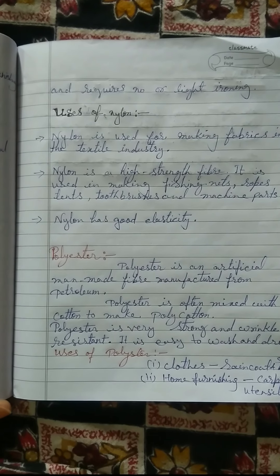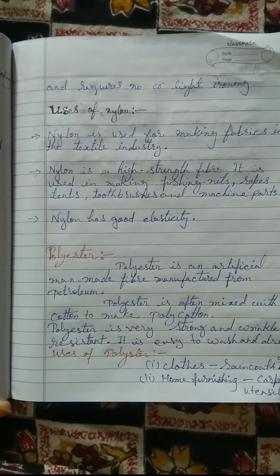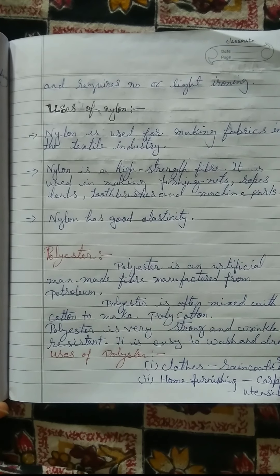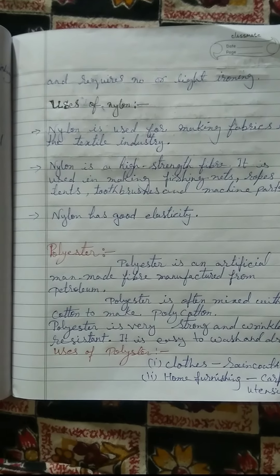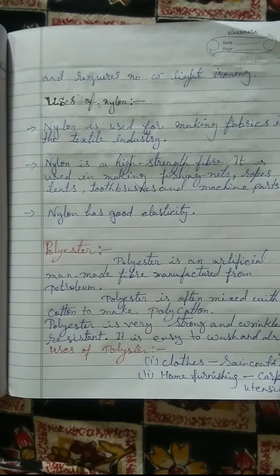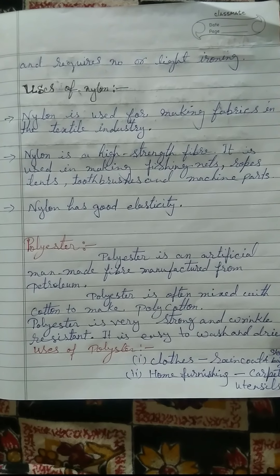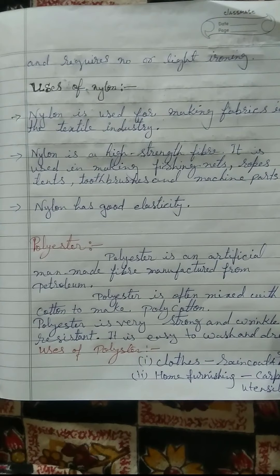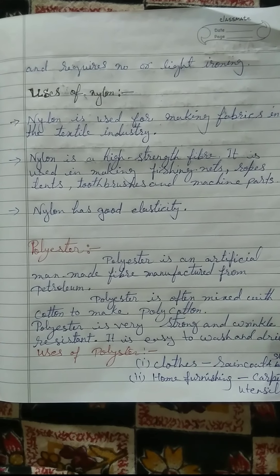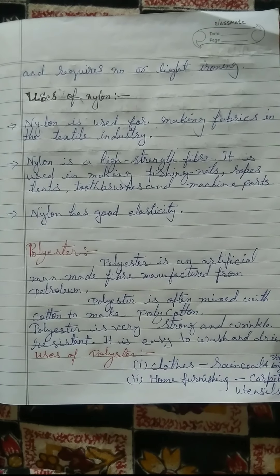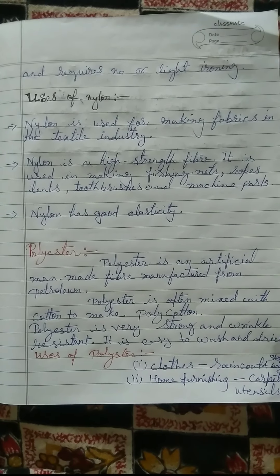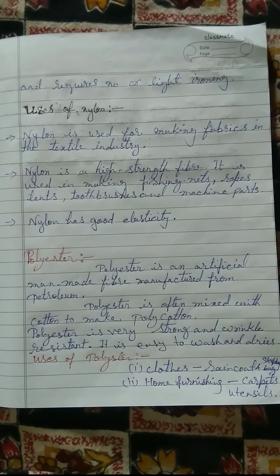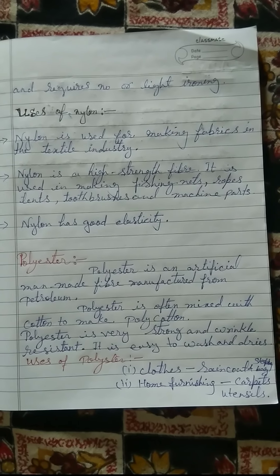Polyester is an artificial man-made fiber manufactured from petroleum. Polyester is often mixed with cotton to make poly-cotton. Polyester is very strong and wrinkle-resistant. It is easy to wash and dry. Uses of polyester: clothes, raincoats, and sleeping bags.